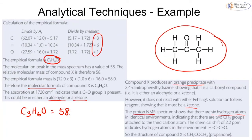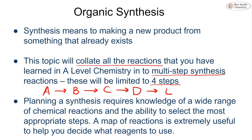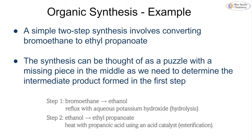Organic synthesis means making a new product from something that already exists. We're collating all of the reactions learned in A-level chemistry to form what's known as a multi-step synthesis, limited at A-level to four steps. You need to be able to plan how to go from A to B to C to D and potentially to a final product E. The most important thing you can do is have a map of your reactions, building up all of your organic reaction knowledge.